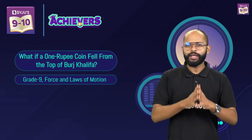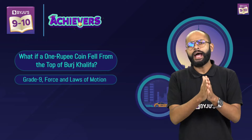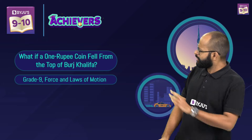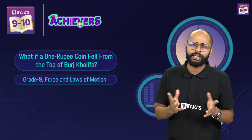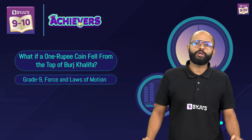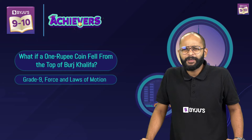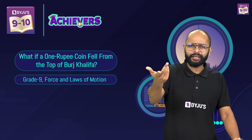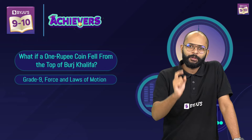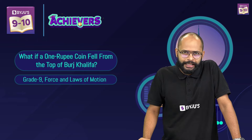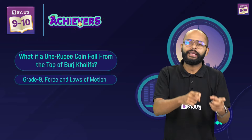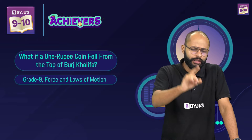Today we add another milestone in our journey of forces and laws of motion by answering one very intriguing question: what if a one rupee coin fell from the top of Burj Khalifa? There's a lot of news which says that it could be lethal, so let's understand first of all why we believe it could be lethal.